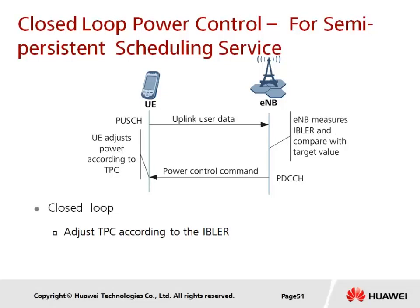The second method is closed loop power control, used only for semi-persistent scheduling, which is a special scheduling algorithm designed for VoIP and VoLTE services where the UE monitors the scheduling channel once every 20 milliseconds. For semi-persistent scheduling, the eNodeB receives the PUSCH, measures the initial block error rate, and compares it with a target. If the measured BLER is greater than the target, a TPC commanding increased power is sent to the UE, which affects the value of FI.